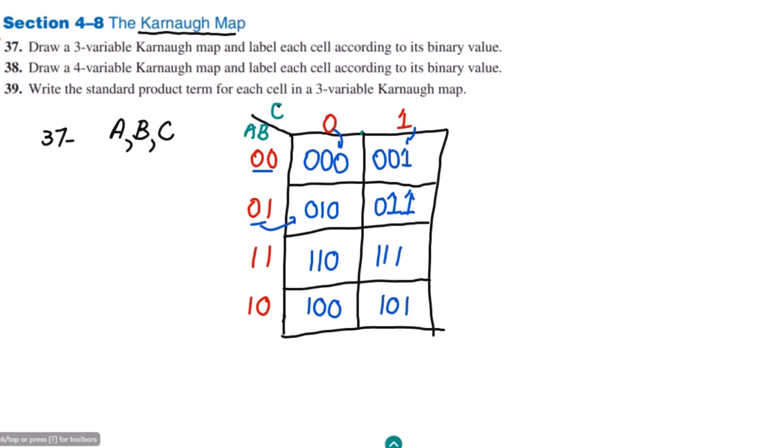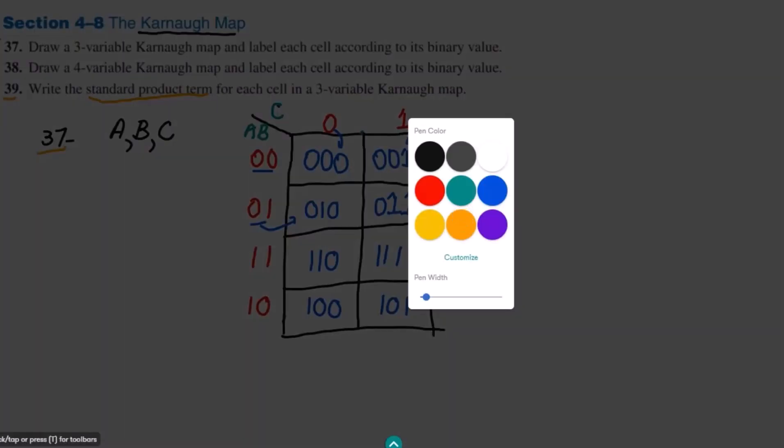Welcome back. This is question 39, where we have to write the standard product term for each cell in a three-variable Karnaugh map. In question 37 we solved and drew a Karnaugh map for three variables. Now we have to write the standard product terms for all the values mentioned here.